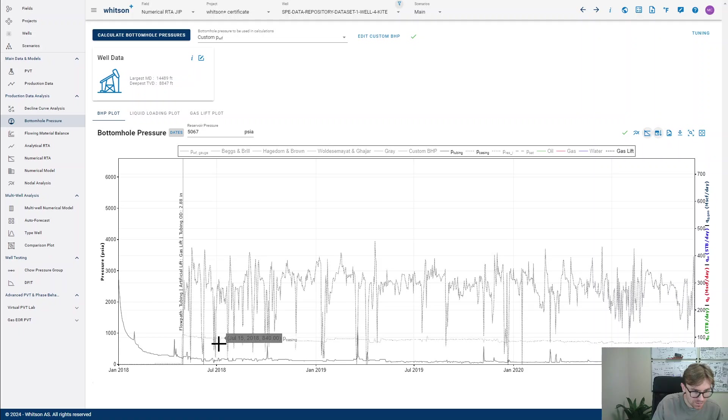So in this particular example, we can see that the gas lift rates came online just after when the tubing was installed right here, which makes sense.